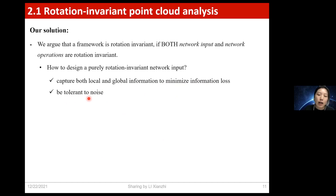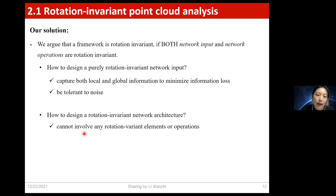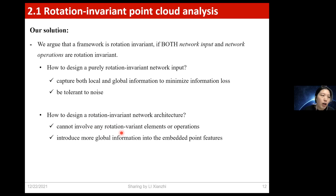When designing the rotation invariant network input, we should first minimize information loss by capturing both local and global information, and second, it should be tolerant to noise since real scanned point clouds may be noisy. As for the network design itself, the network cannot involve any rotation-variant operations — for example, some attention modules designed based on point coordinates cannot be used. Also, since relative information is too local, we should pay special attention to introducing more global information into the embedded point features.